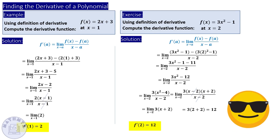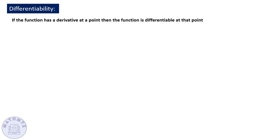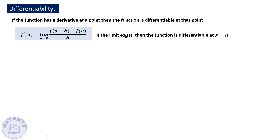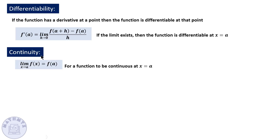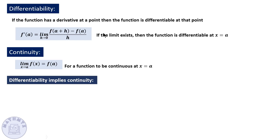Let's move to the next slide and talk about differentiability. If the function has a derivative at a point, then the function is differentiable at that point — meaning the slope of the tangent line, which is the limit of the slope, exists from both sides. For continuity, the limit from the right and left should be the same, and it should equal the image of the function f(a).